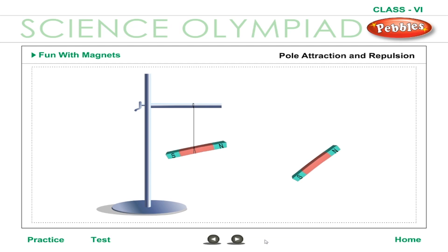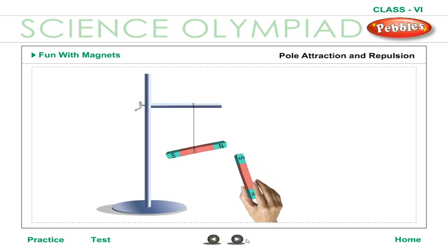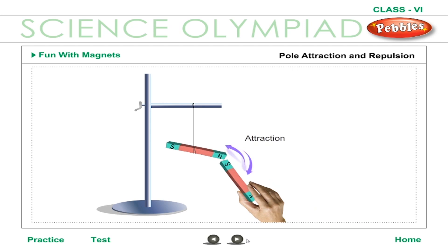Pole attraction and repulsion. Take two bar magnets and suspend one with a piece of thread — it will come to rest in the north-south direction. Hold the other magnet in your hand and bring its north pole near the north pole of the suspended magnet. You will find that the north pole of the suspended magnet is repelled and moves away. Now bring the south pole of the magnet near the north pole of the suspended magnet — it will be attracted towards the south pole. We therefore conclude that like poles repel and unlike poles attract each other.